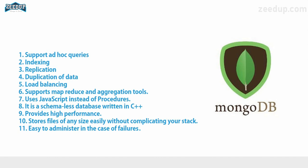Whatever your file size is, it doesn't matter — MongoDB will simply load balance it. That is why MongoDB is preferred for data of humongous size and is used to deal with big data. It is also easy to administer in case of failures compared to RDBMS and OLAP, because it regularly creates replication and backups of the data, allowing recovery from a different server.